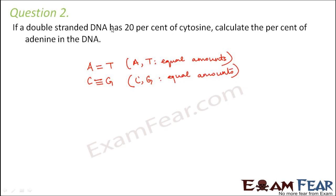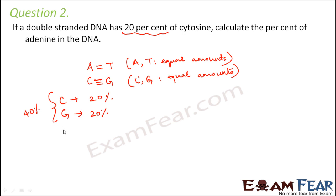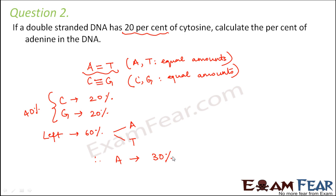Since cytosine is 20 percent, guanine will also be 20 percent, so together cytosine and guanine cover 40 percent. The remaining 60 percent is divided among adenine and thymine. Therefore adenine's share would be 30 percent — so the percentage of adenine in the DNA would be 30 percent.